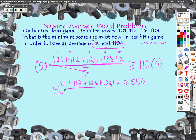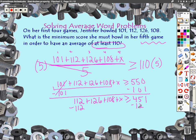Subtract 101 from both sides. Cancel out, what does it leave you? 112 plus 126 plus 108 plus x is greater than or equal to 451. And you could keep on subtracting each one of these. Let's write that correctly.